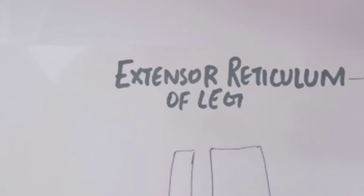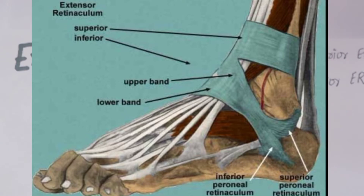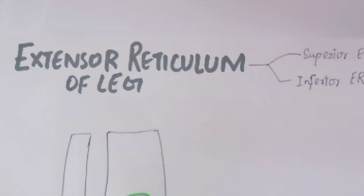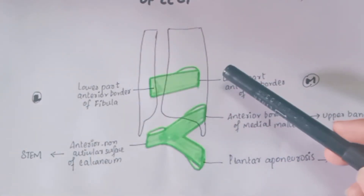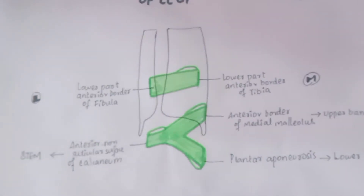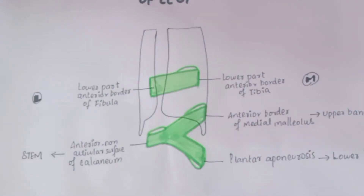The extensor retinaculum of the leg has two types: the superior extensor retinaculum and the inferior extensor retinaculum. The superior extensor retinaculum is in the form of a rectangular band, while the inferior extensor retinaculum is Y-shaped.